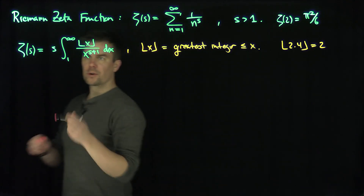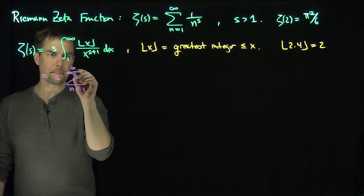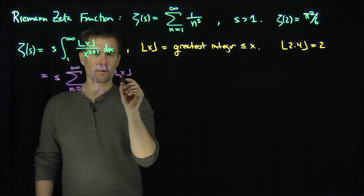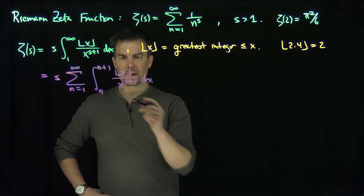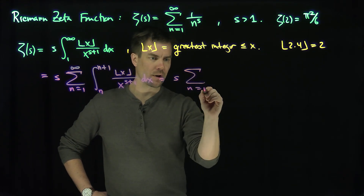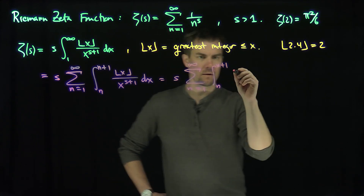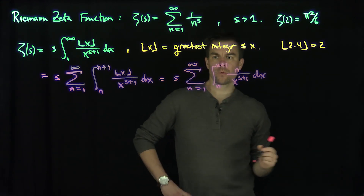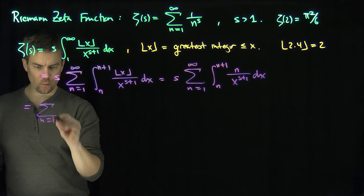To prove this, we note that the integral equals s times the sum from n equals 1 to infinity of the integral from n to n plus 1 of the floor of x over x to the s plus 1 dx. Now, between n and n plus 1, the floor function is exactly equal to n. So this becomes s times the sum from n equals 1 to infinity of the integral from n to n plus 1 of n over x to the s plus 1 dx.